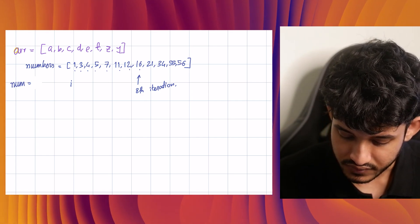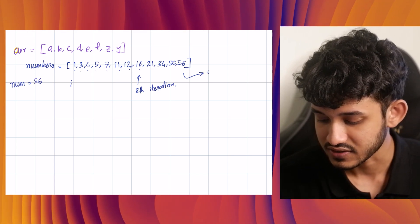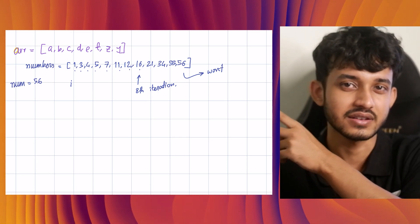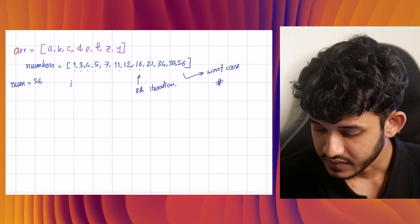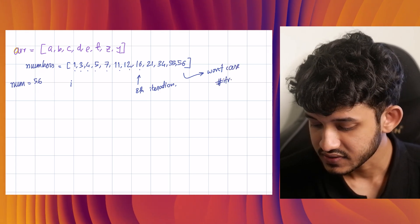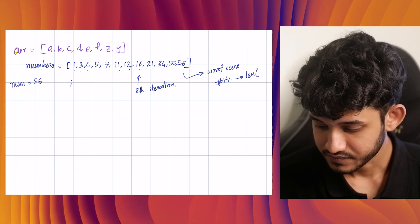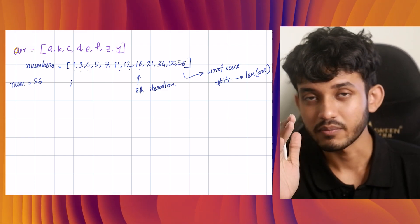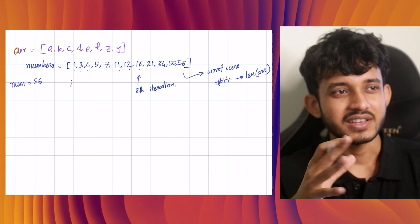So instead of 16, if the value of num was 56, it will definitely take us - what is the worst case? The worst case is we have to look through the whole list and we find the number at the end. So the worst case is number of iterations equals the length of the list. That is the number of iterations. The worst case scenario that can happen. But on a very hindsight, can we make this better?